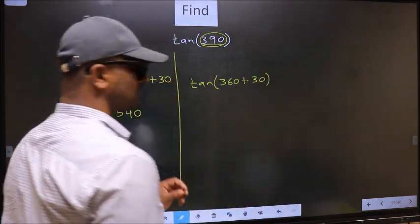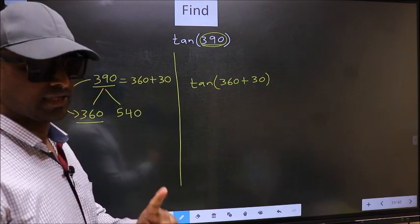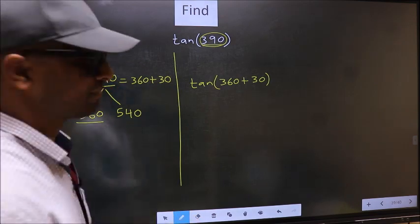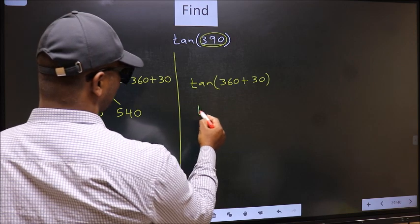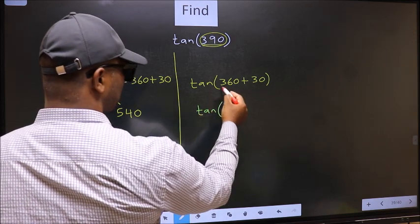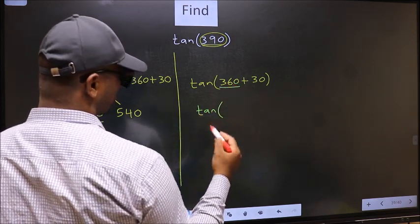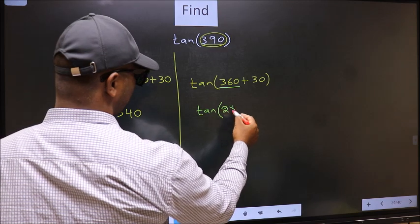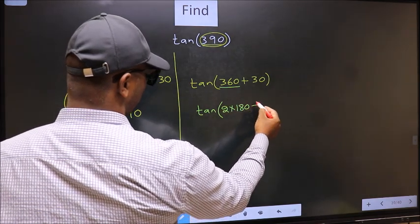This is your step 1. Next, tan in place of 360 now we should write 2 into 180 plus 30.